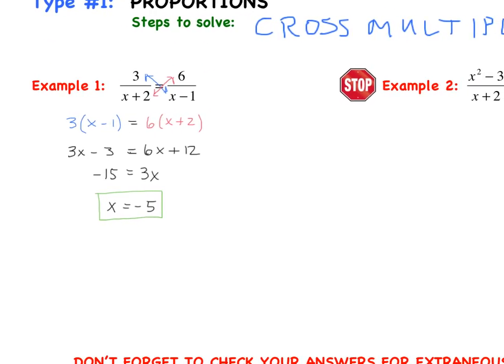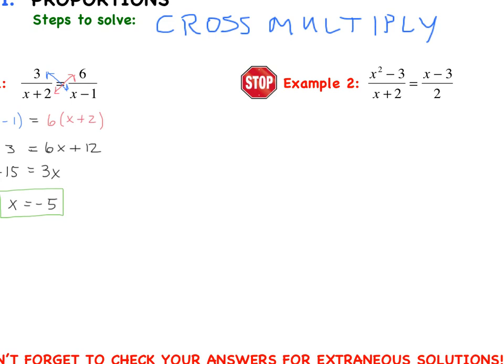I want you to try example 2 on your own. Here's a hint: when you cross-multiply, you're going to have to FOIL, and you'll need to solve a quadratic equation. Go ahead and solve this rational equation. Hopefully you ended up with two solutions: x equals 0 or x equals negative 1. If you didn't get those, bring those questions to class tomorrow.